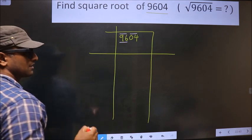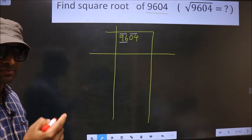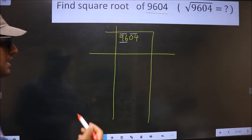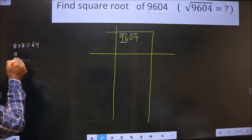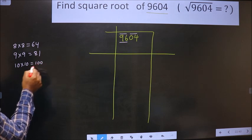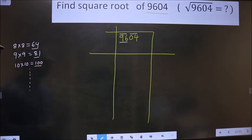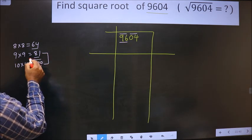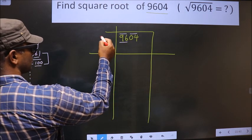Here we have 96. 96 is not a perfect square, so now we should see between which two perfect squares does 96 lie. The perfect squares are 8 into 8 = 64, 9 into 9 = 81, 10 into 10 = 100, and so on. Here we have 96, it lies between these two numbers, so we take the smaller one, that is 81. 81 is 9 times 9, so 9.